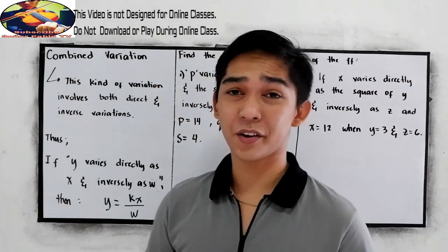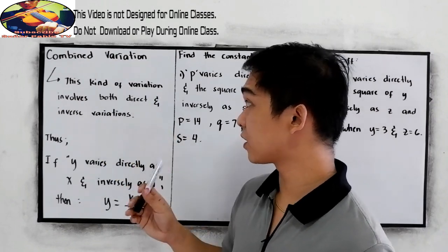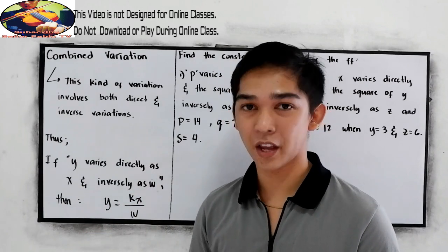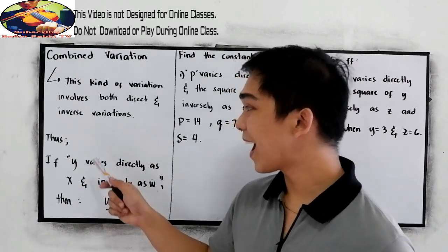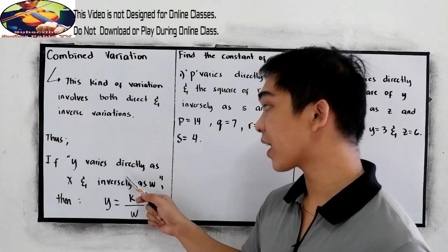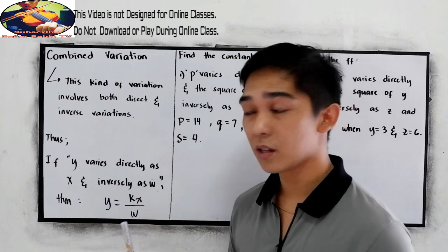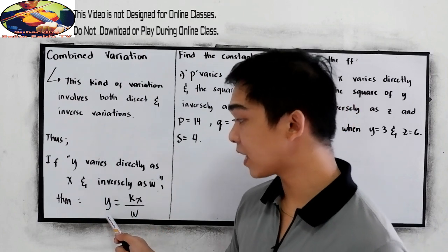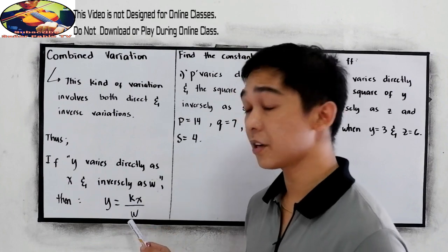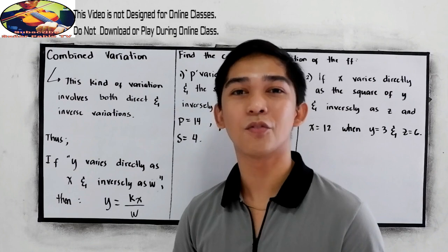In combined variation, this is a kind of variation that involves both direct and inverse variation. So if you have y varies directly as x and inversely as w, that can be written as y is equal to kx all over w, wherein k is the constant of variation.